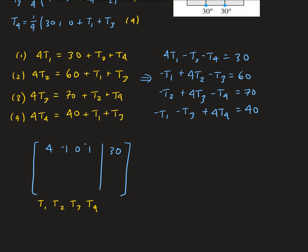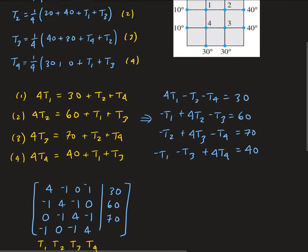For the second equation: -T1 gives -1, 4T2 gives 4, -T3 gives -1, and no T4 gives 0; the right-hand side is 60. For the third equation: no T1 gives 0, -T2 gives -1, 4T3 gives 4, -T4 gives -1; the right-hand side is 70. For the fourth equation: -T1 gives -1, no T2 gives 0, -T3 gives -1, 4T4 gives 4; the right-hand side is 40. This is our complete augmented system.